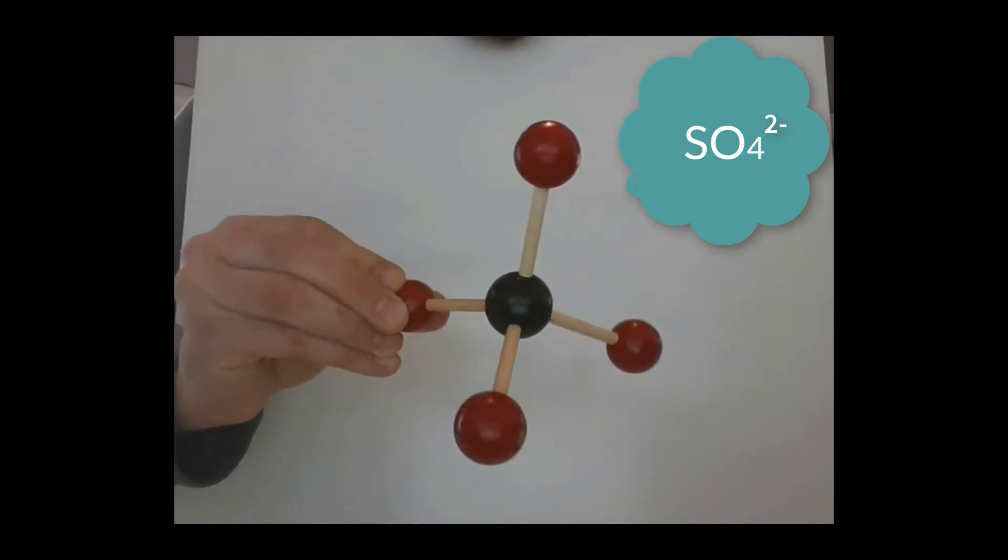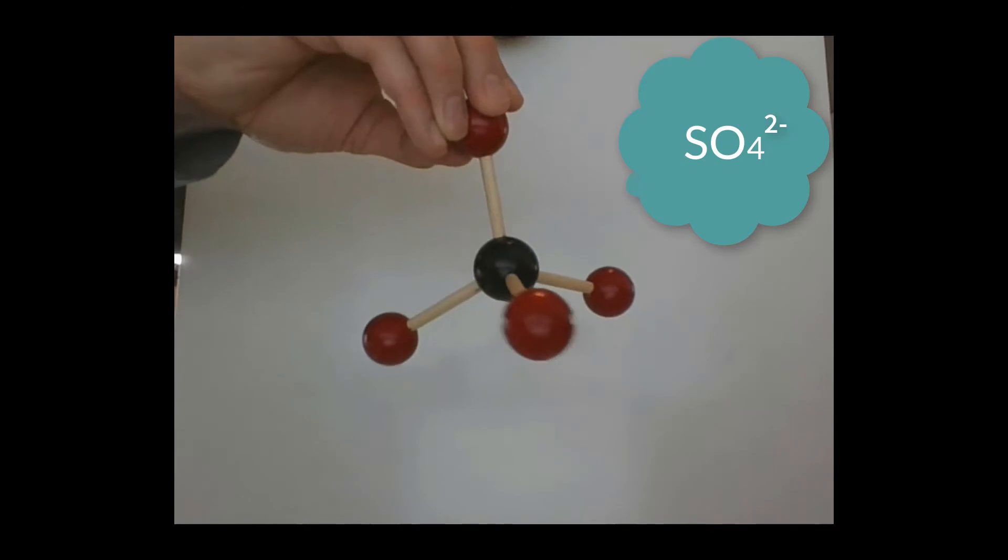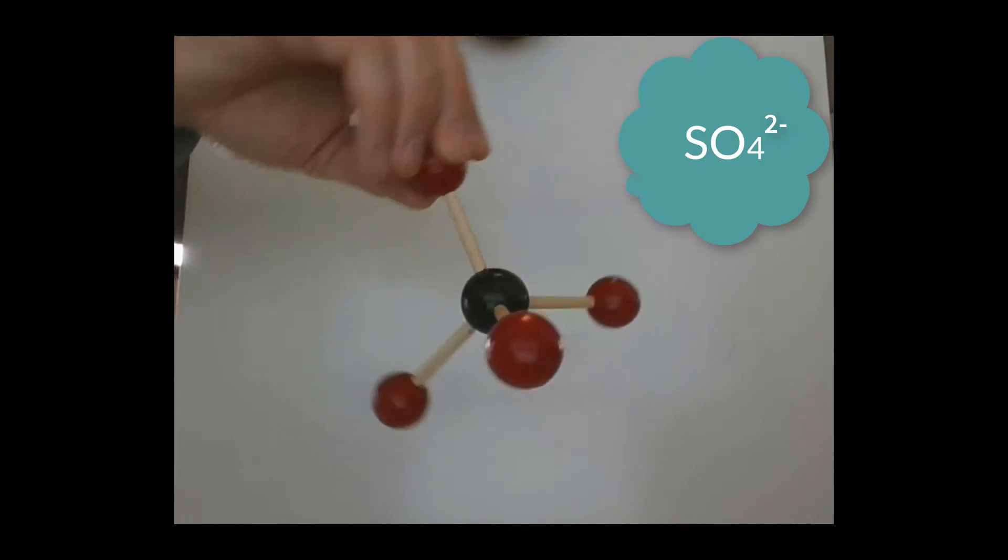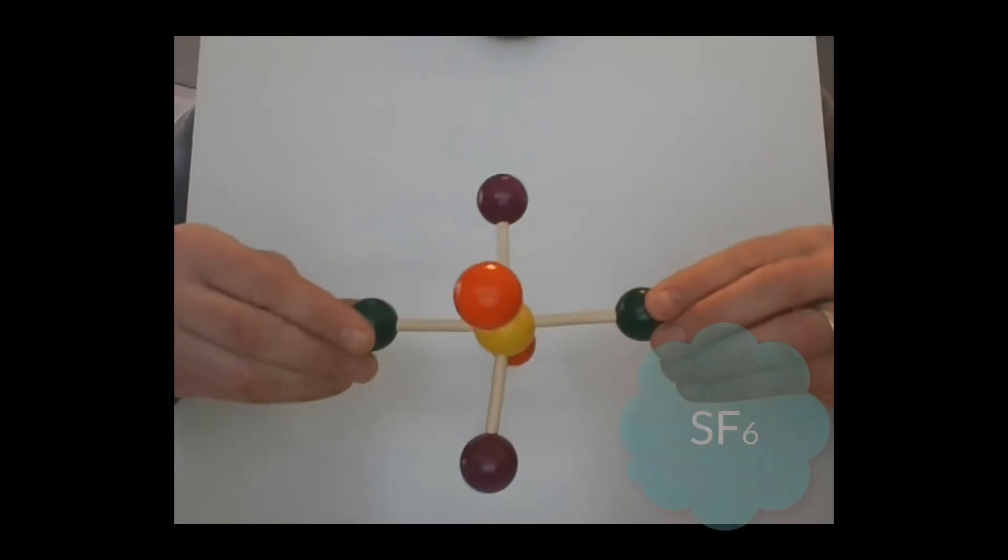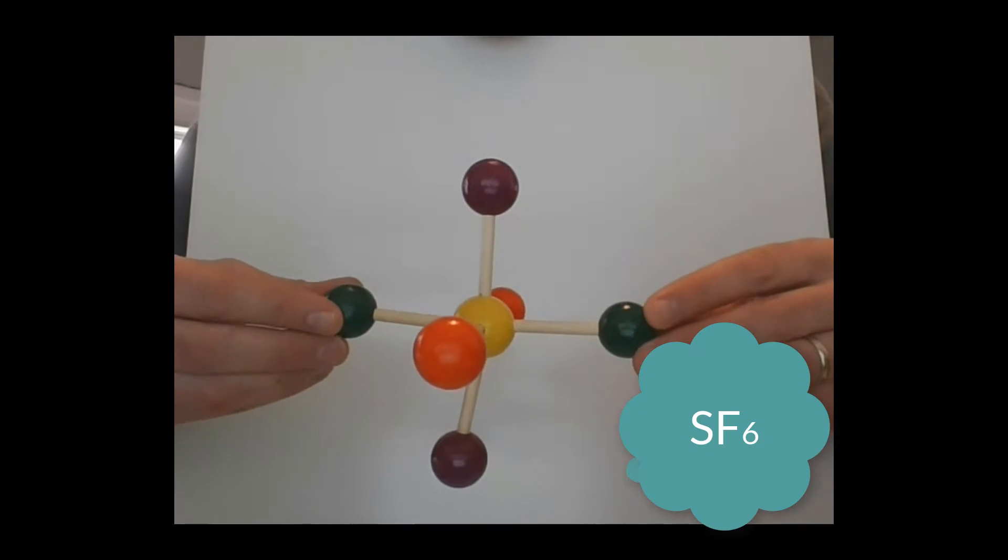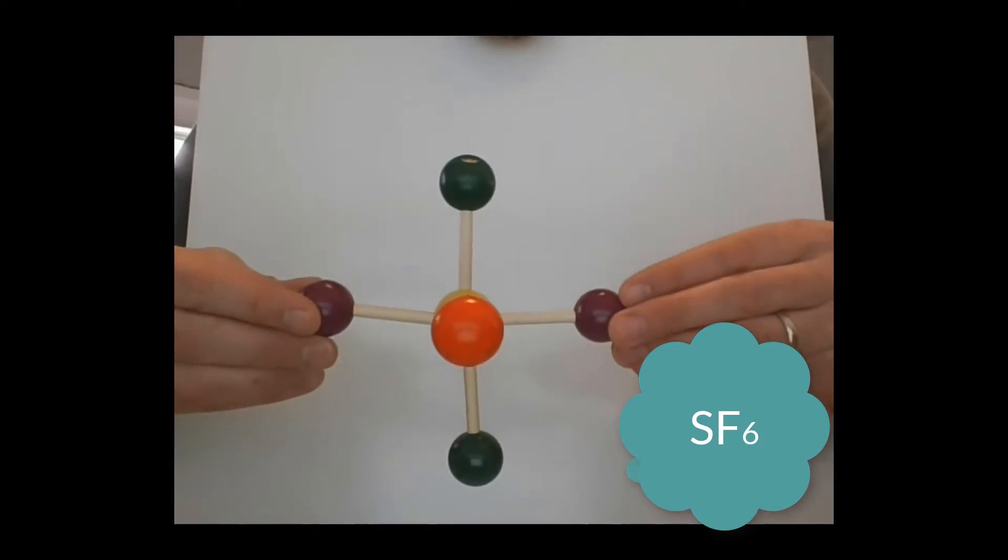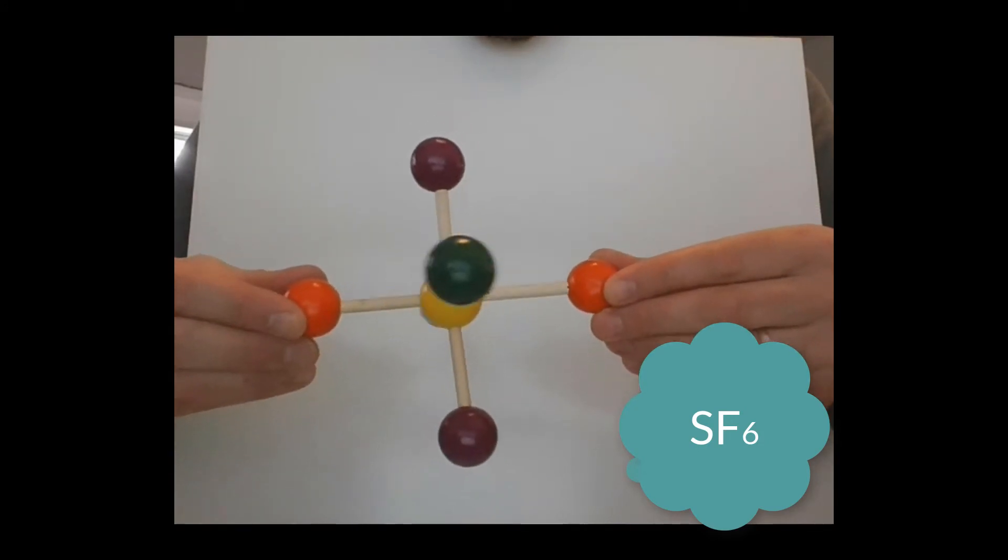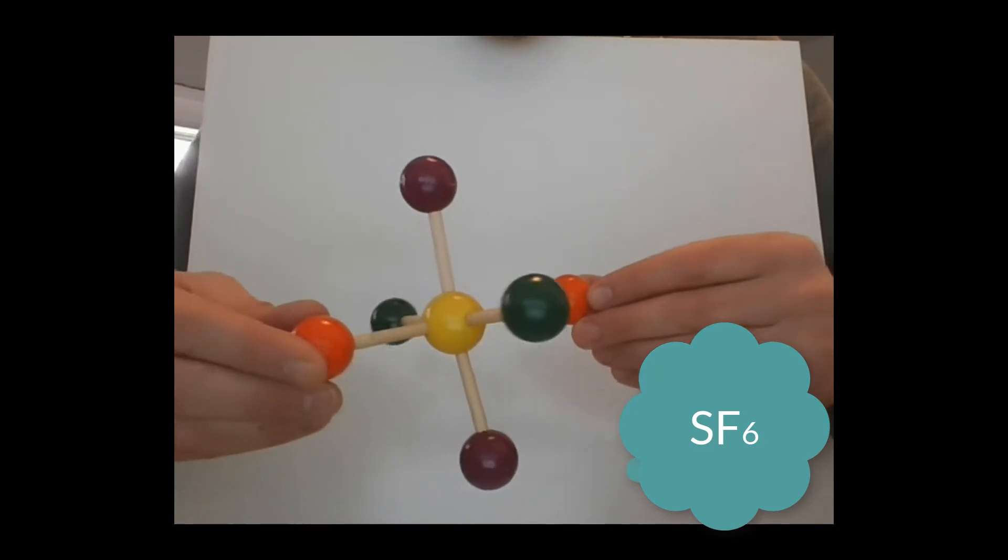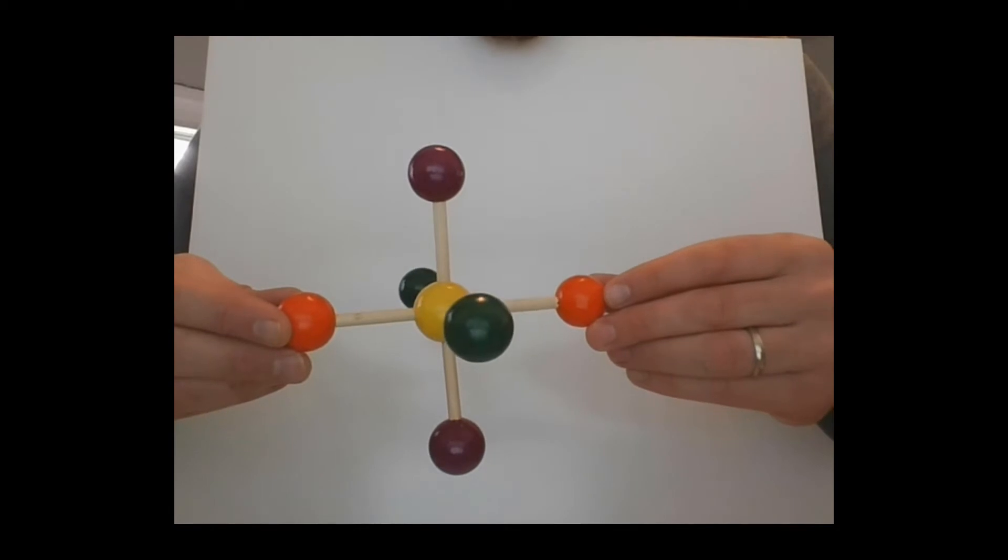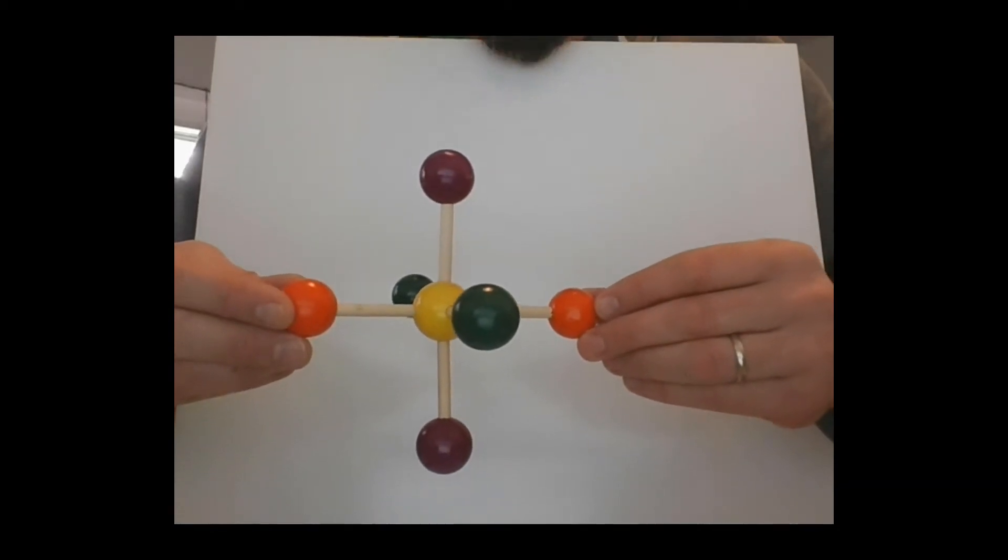And we're going to call this one SF6. Notice that I didn't have six of the same colored ball to put on the outside other than yellow, so I made two oranges, two purples, and two greens. Orange, purple, and green are all fluorine.